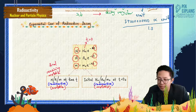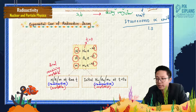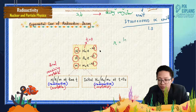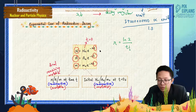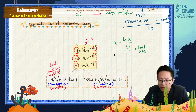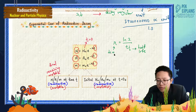Lambda is dependent on the material. Lambda has the formula: ln 2 over half-life. This is called the half-life, and lambda is called the decay constant. Both of these values depend on the material.